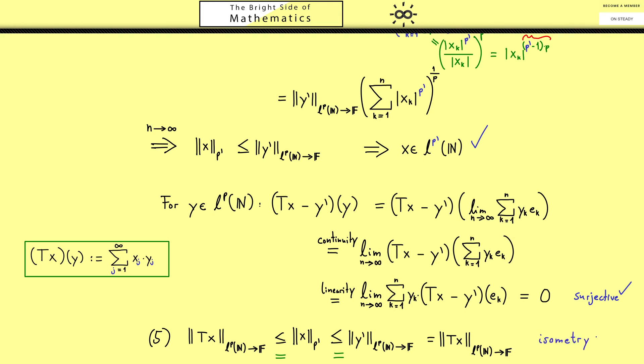Of course this was a technical proof but there are some ideas here you can use for other problems as well. And please always remember the result here: the dual space of LP is isometrically isomorphic to LP prime. Okay I think that's good enough for today. I really hope I see you in the next video and have a nice day. Bye!